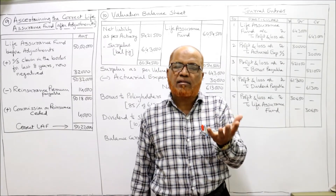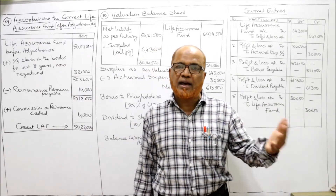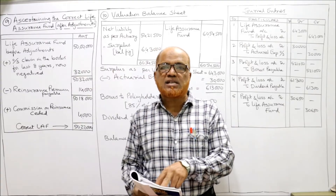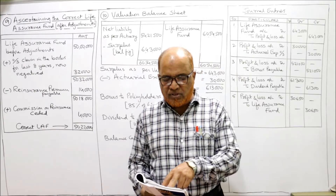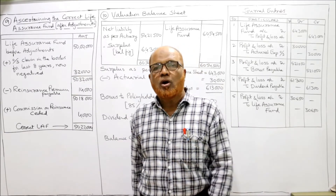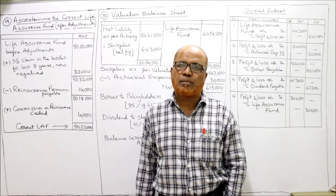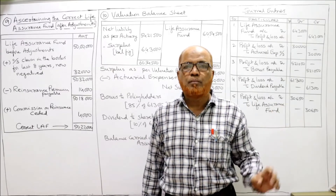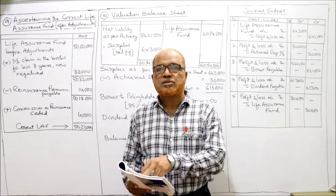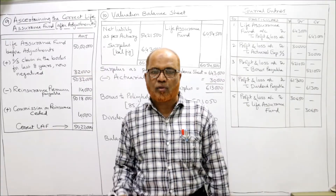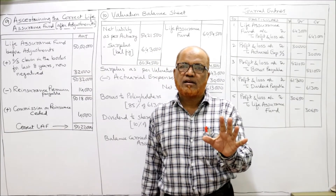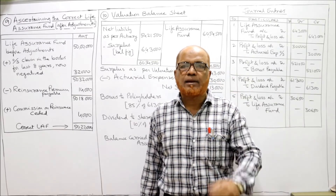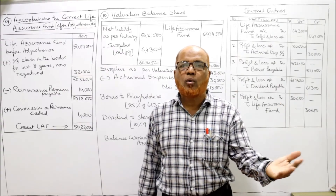The directors resolved that ₹30,000 will be set apart for actuarial expenses — the actuary calculating the net liability has to be remunerated. 85% of the net surplus will be utilized for paying bonus to policyholders. Normally according to the LIC Act 95% of net surplus is paid as bonus, but here the problem specifically states 85%. 10% of net surplus will be utilized towards dividend to shareholders, and the balance will be carried forward.